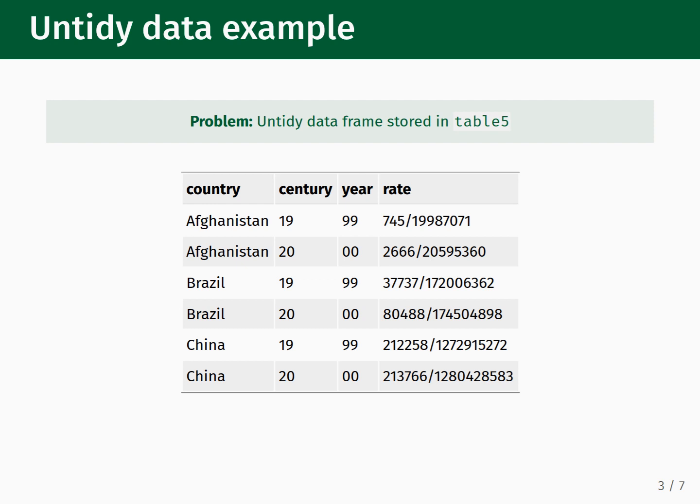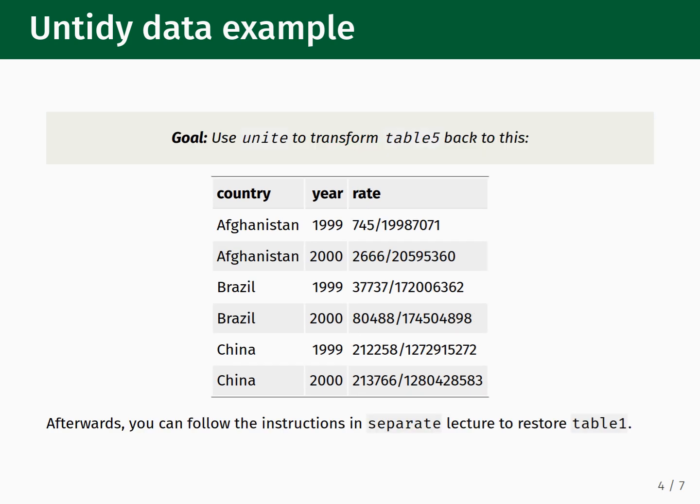Storing data in the way shown does not satisfy the tidy data principles, hence we would classify it as untidy. As a reminder, this is what the same dataset would look like if the table was organized according to the tidy data principles. Our task is to use the Unite function to reshape our data in the table from the previous slide so that it looks like the table shown on this slide. Note that after we use the Unite function, we would need to follow the same steps as discussed in the Separate lecture to get back to the tidy form.